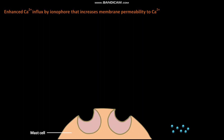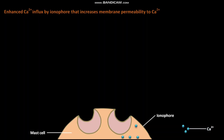We will now discuss mast cell degranulation by enhanced calcium ion influx via an ionophore that increases membrane permeability to calcium ions. The mast cell surface has ionophores. Extracellular calcium ions pass through the ionophore into the mast cell cytosol — this is called calcium ion influx. This enhanced calcium ion influx increases membrane permeability to calcium ions, and the mast cell then undergoes degranulation.